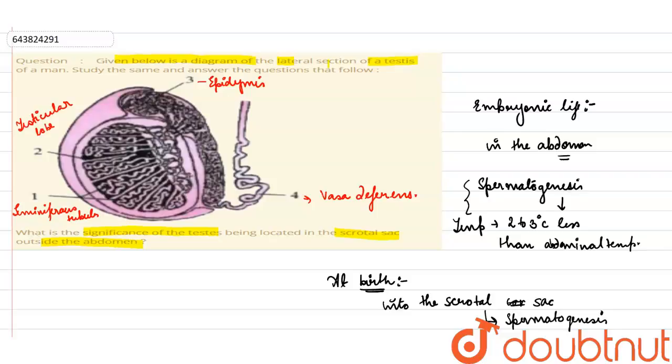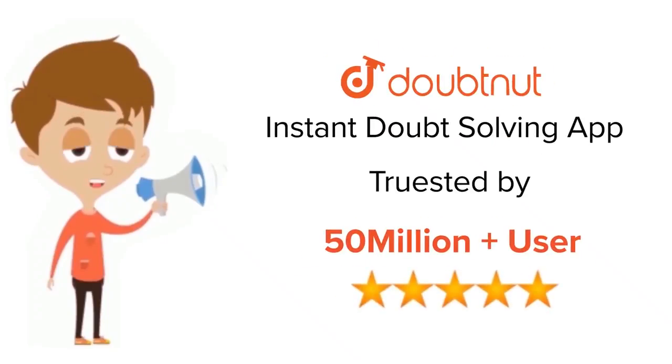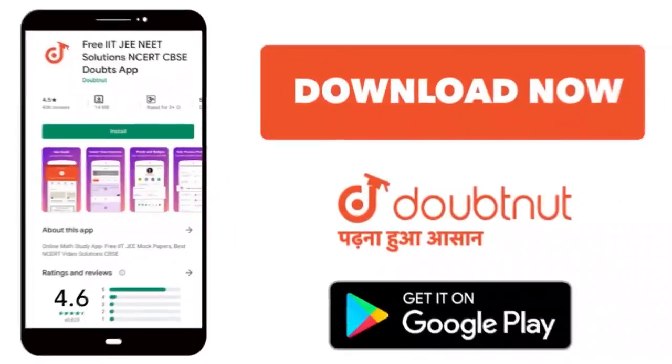So this was all about the question. For class 6 to 12, IIT-JEE and NEET level, trusted by more than 5 crore students. Download Doubtnut app today.